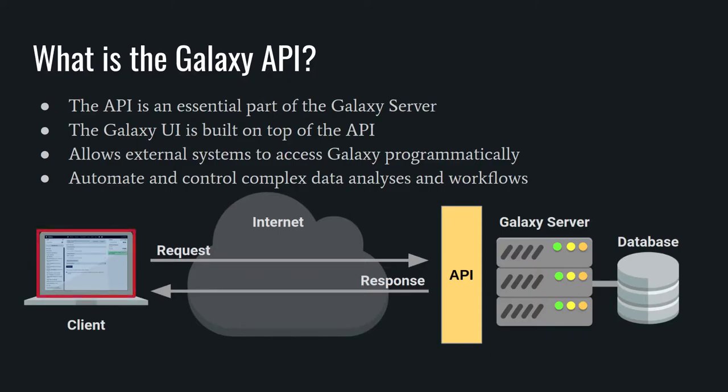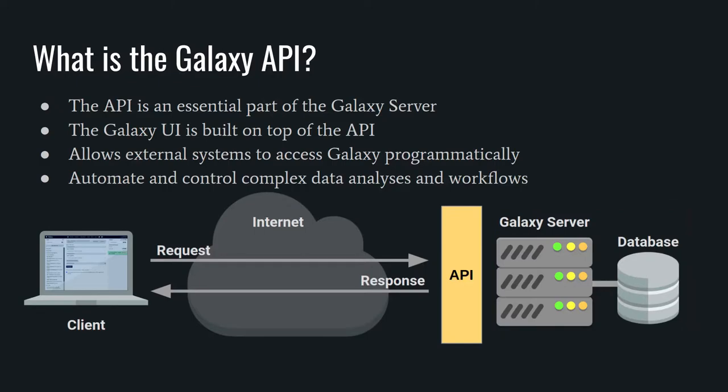In fact, the Galaxy web interface or front-end is an example of a client that uses the API to perform all the interactions with the server, so this interface enables multiple kinds of clients to communicate with Galaxy. For example, it can also be used to automate and control complex data analysis and workflows in a programmatic way and integrate it with your own system and applications, using other client implementations like BioBlend.